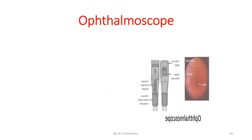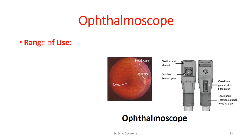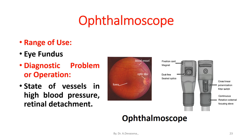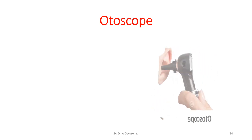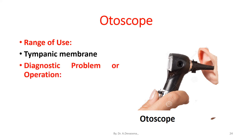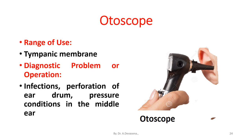Now we are viewing the ophthalmoscope. The range of use of the ophthalmoscope includes the eye fundus. The diagnostic problems done by the ophthalmoscope include the state of vessels in high blood pressure and retinal detachment. Now we are viewing the otoscope. The range of use of the otoscope includes the tympanic membrane present inside the human ear. The diagnostic problems done by the otoscope include infections, perforation of the eardrum, and pressure conditions in the middle ear.